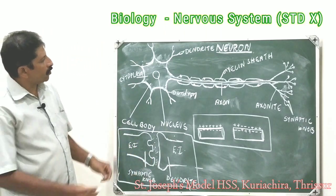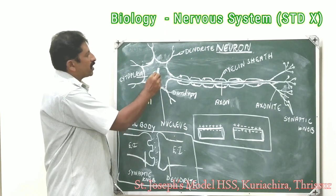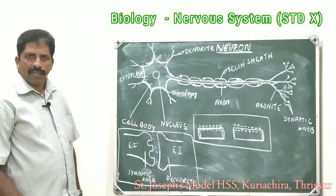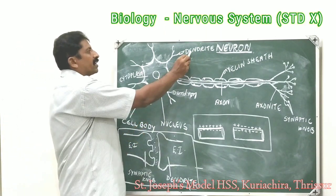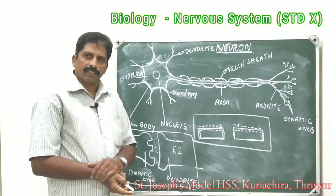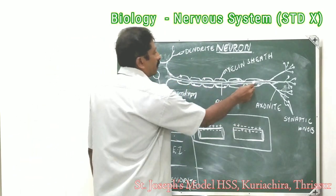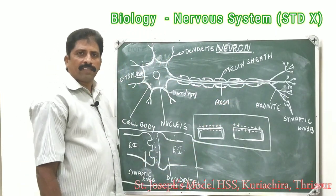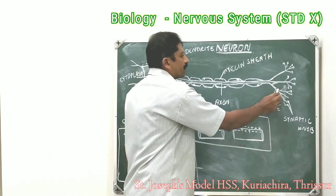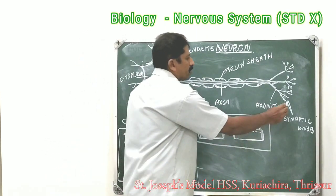To summarize the structure of the neuron: the main part is the cell body with the nucleus, and numerous branches arise from it called dendrons. The branches of dendrons are called dendrites. One of the dendrons is longer than the others — this longest dendron is called the axon. The branches of the axon are called axonites, and the axonites end in swellings called the synaptic knob.